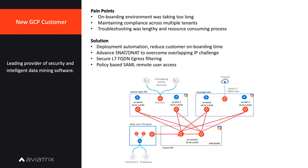Another concern was providing compliance across multiple tenants — they needed to make sure traffic was segregated because there are different clients. And when a problem occurred in the application, troubleshooting was a very lengthy process. Customers would come to them saying they can't ping from their on-prem side to their site, or from their cloud VPC to the customer's cloud VPC. Those were the real problems this customer had.